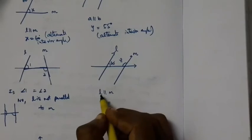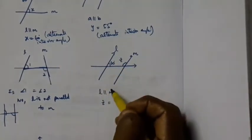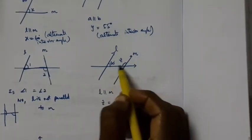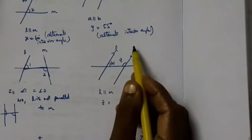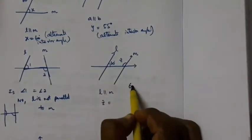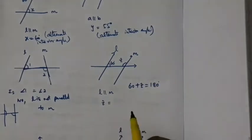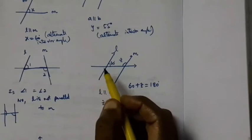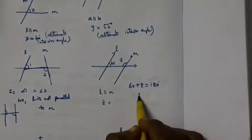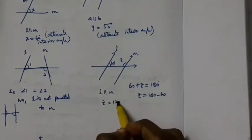Here they have given L is parallel to M, and they have asked what is Z. These are interior angles that lie on the same side of the transversal, so 60 plus Z equals 180. Therefore Z equals 180 minus 60, which is 120 degrees.